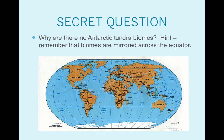Here's a secret question: why are there no Antarctic tundra biomes? Here's a big hint — look at a map of the globe. Remember that biomes are mirrored across the equator. The equator cuts through Brazil, the middle of Africa, and Indonesia. Take a look at where the Arctic Circle is and try to figure out why there's no tundra in the Antarctic.